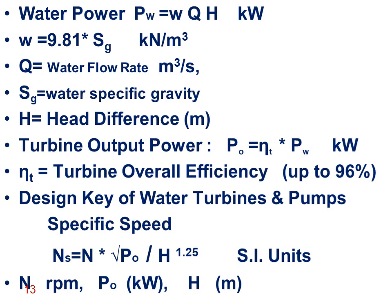We have a dimensionless number called specific speed — this is a key design parameter for water turbines, pumps, and compressors; any machine working with fluid. Specific speed is defined as N multiplied by the square root of power output, divided by H to the power of 1.25, in SI units where N is in RPM and power output P₀ is in kilowatts.